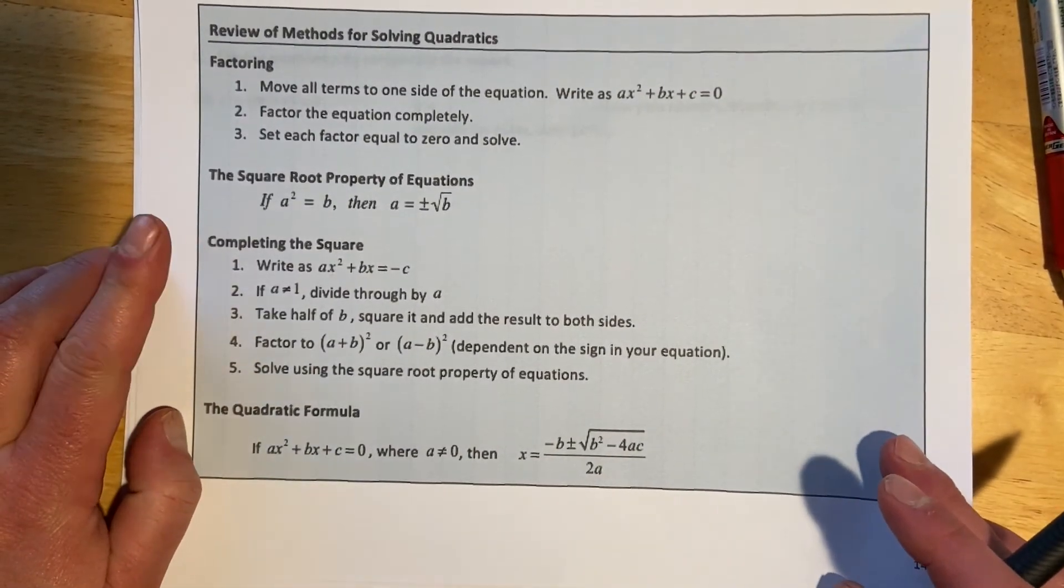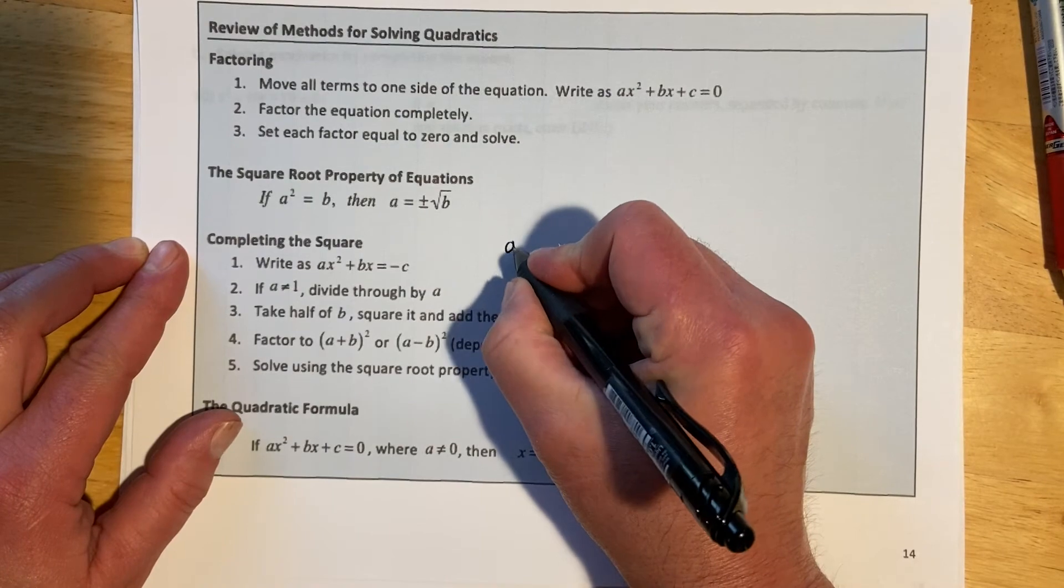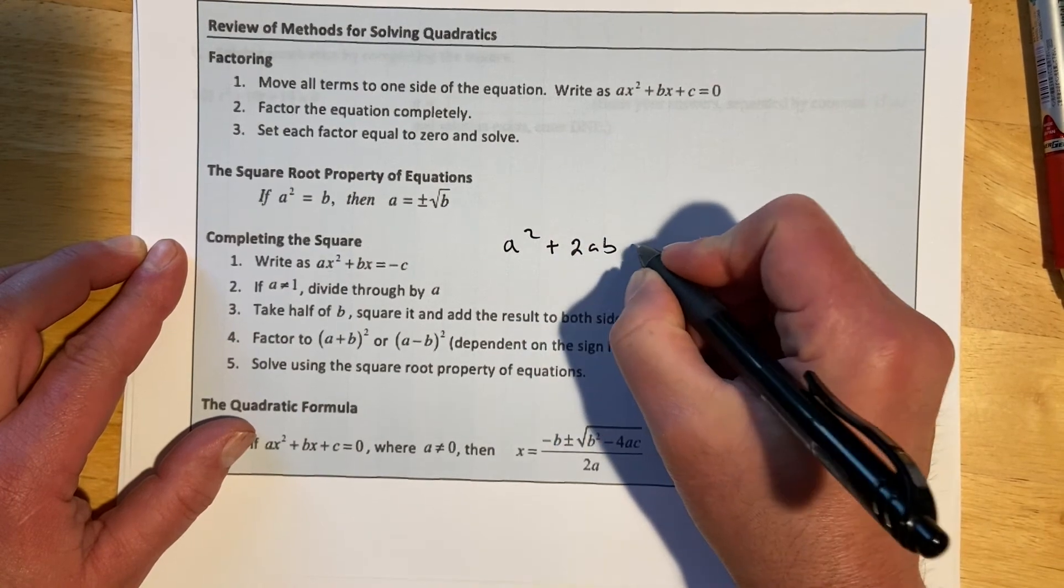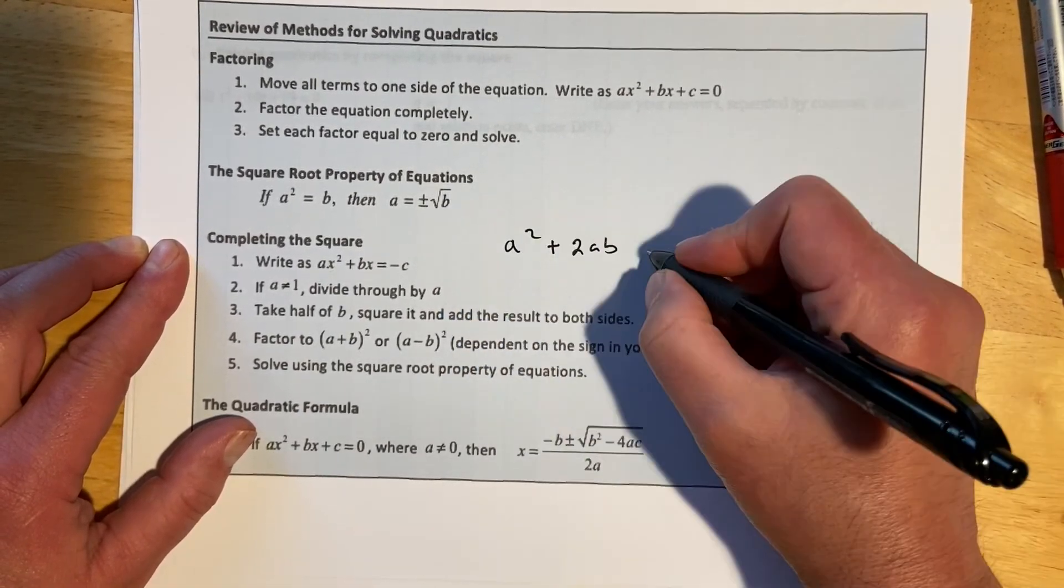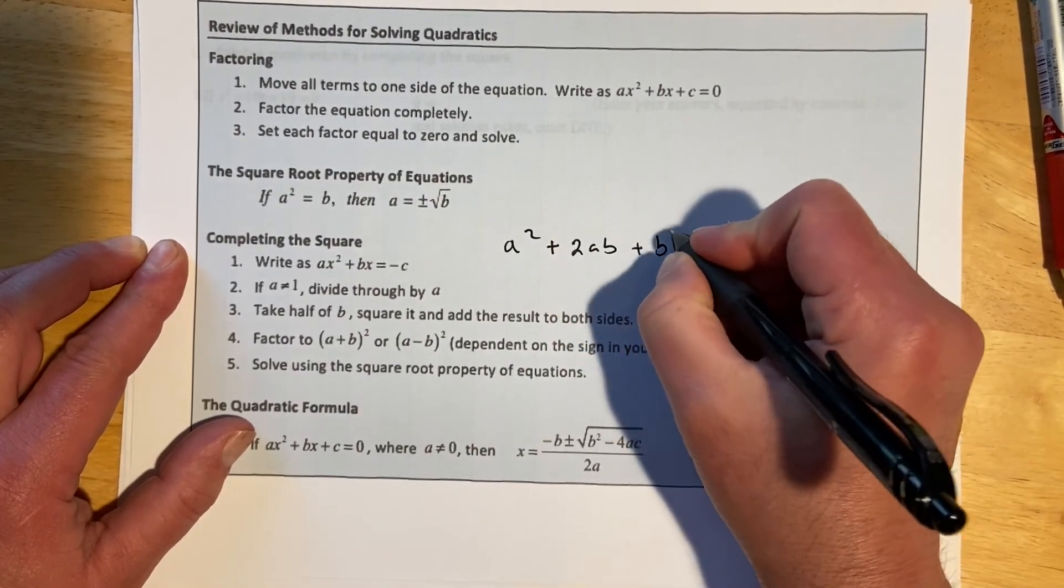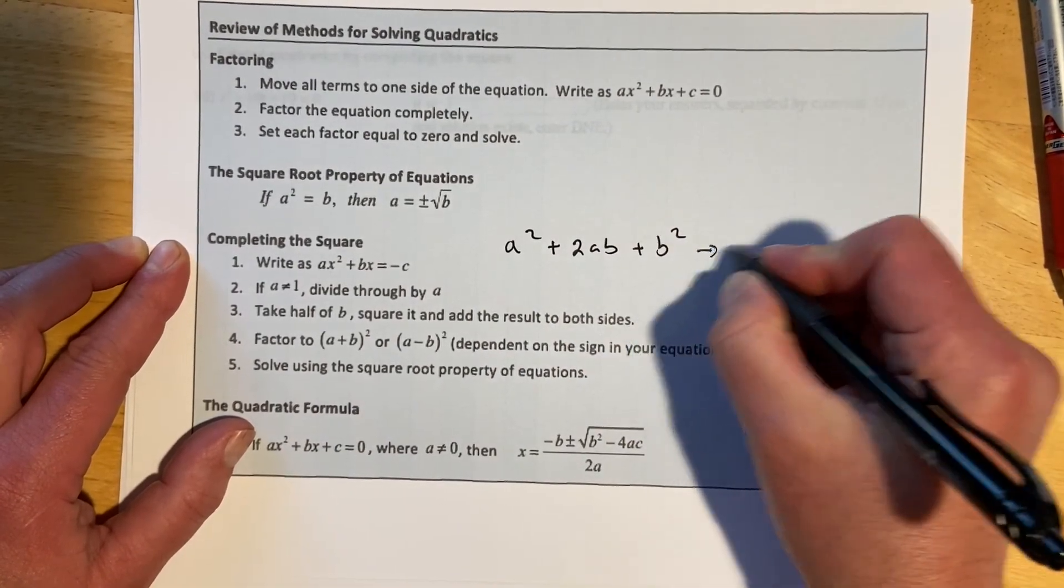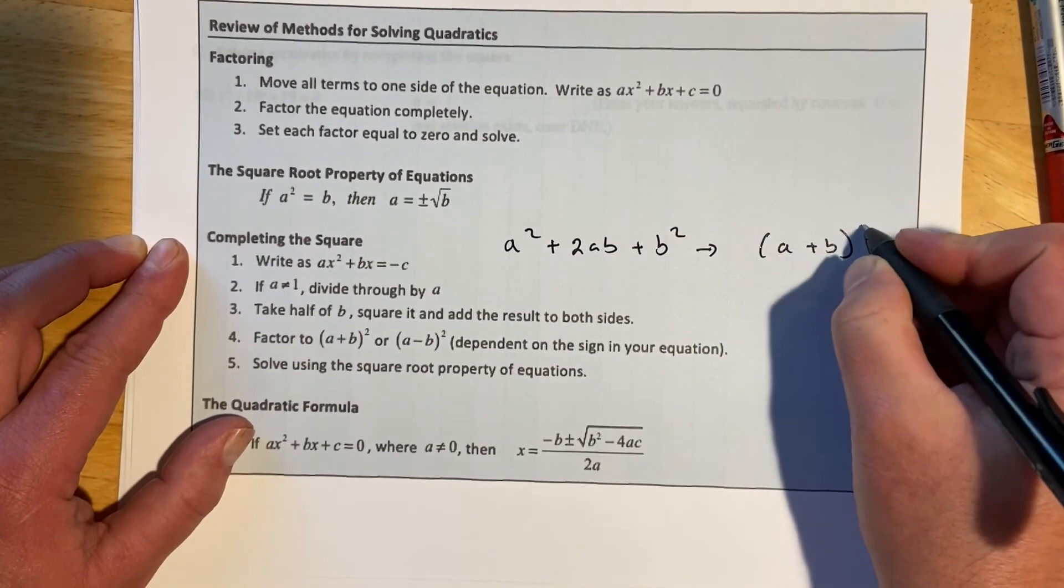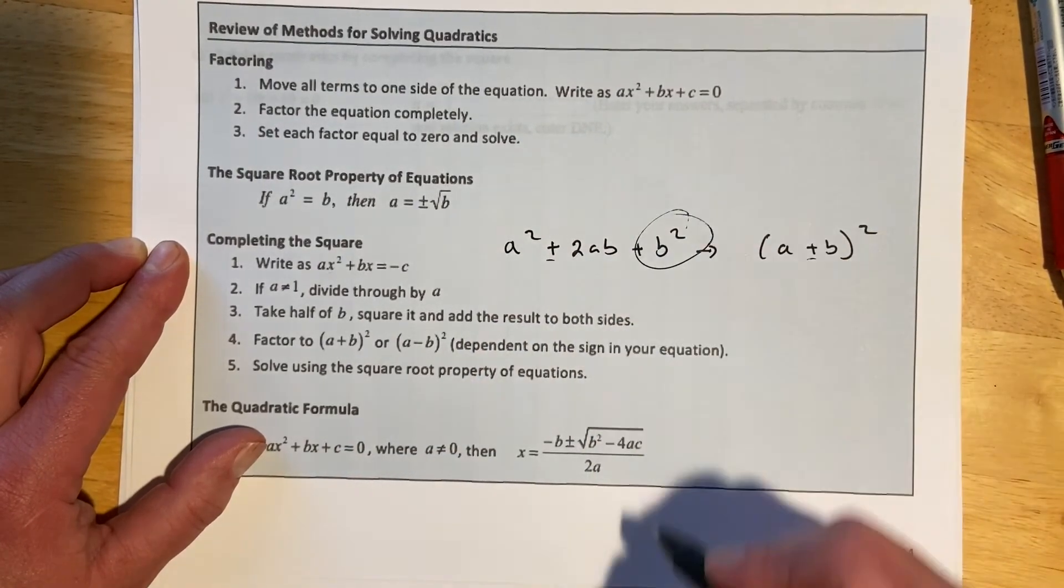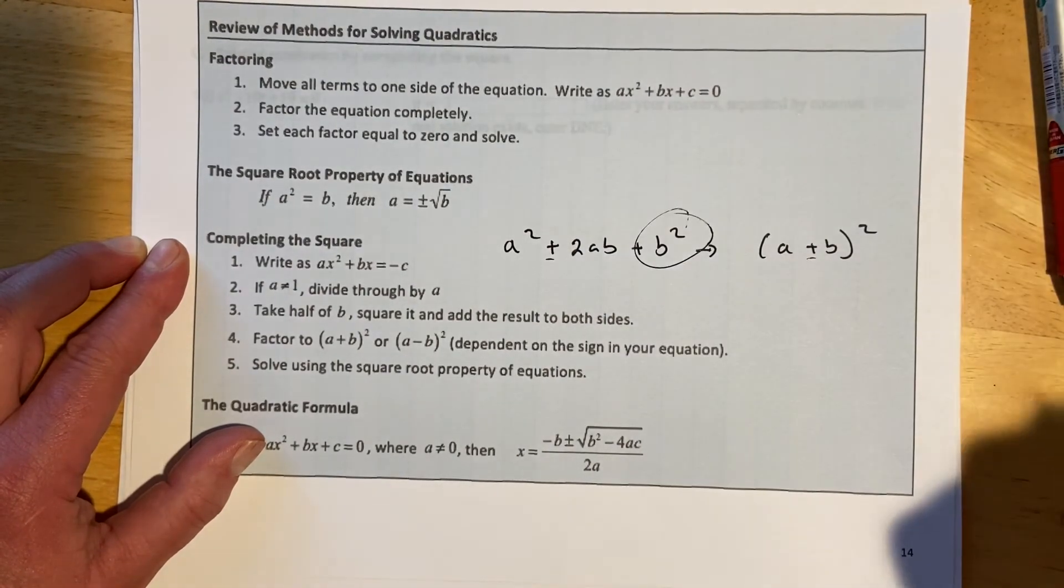And that gets us to our third method, which is completing the square. And what this is, is we're trying to take something that isn't in the form a² ± 2ab + b². That isn't in that nice, perfect trinomial square form. And we're going to complete the square. We're going to get a version of something here that makes this work. So that then we're able to factor it to (a + b)². And again, if that happened to be a minus, then that's a minus. That's the goal of completing the square, is to make this thing so that we can get this thing. And then we can do our square root on both sides like we just did in those last two examples.